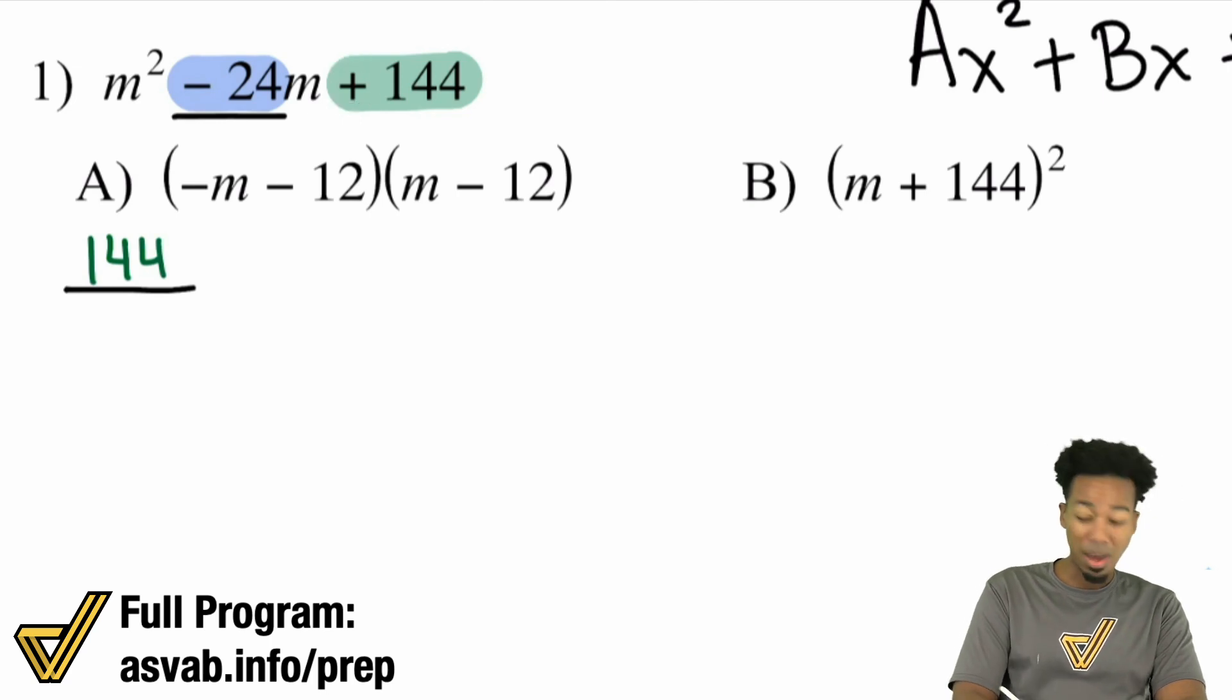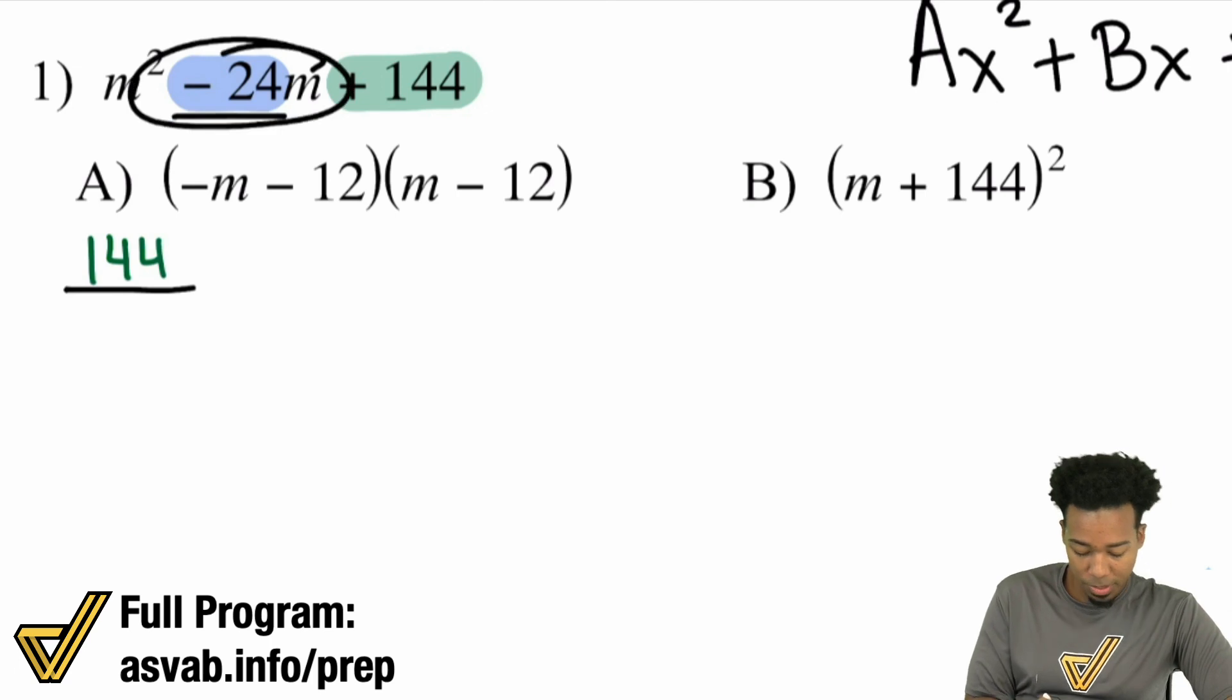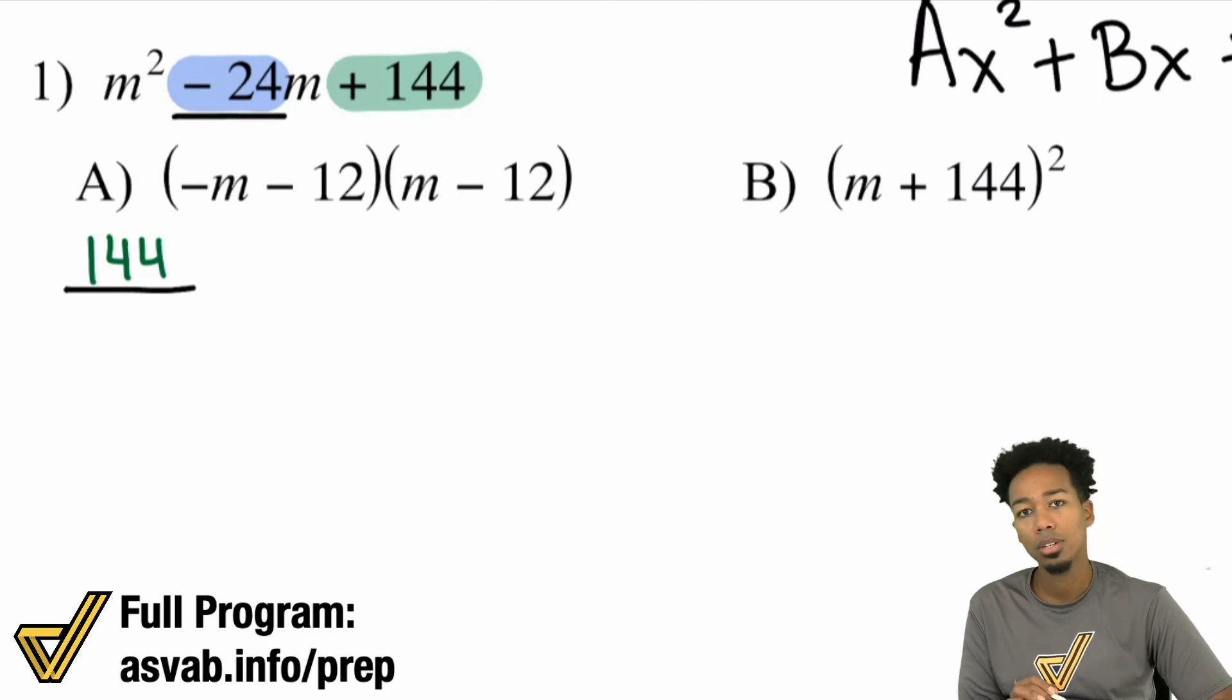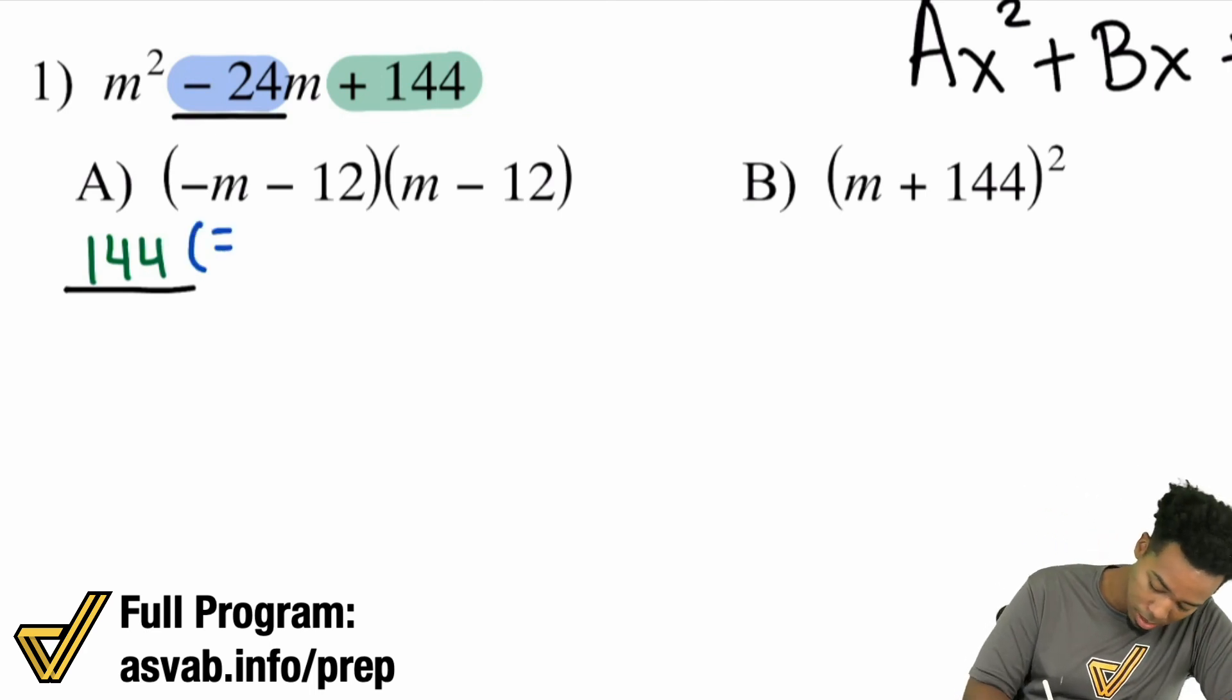If it multiplies to a positive 144, the only way you can multiply to a positive is going to be a positive times a positive or a negative times a negative. So remember, that factor pair needs to add up to the B term, the negative 24. Can you add two positives to get a negative? No. Can you add two negatives to get a negative? Yes. So we know that both of these factors are going to be negative.